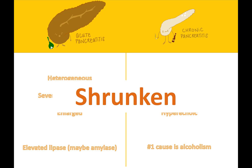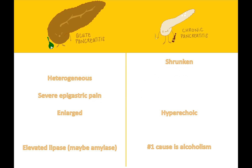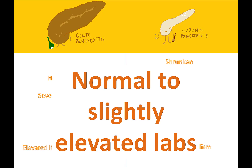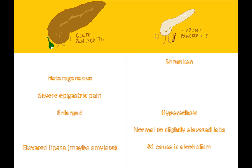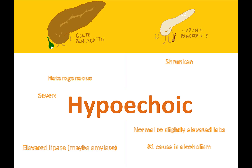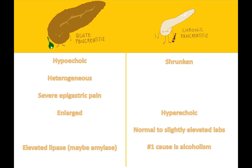Which will cause the pancreas to appear smaller than normal? Chronic pancreatitis. Chronic diseases often cause the organ to become shrunken. When will labs be normal to slightly elevated? Chronic pancreatitis exhibits mostly normal labs, with the possibility of slightly elevated serum lipase and amylase. Which pathology will cause the pancreas to appear hypoechoic? Acute pancreatitis.